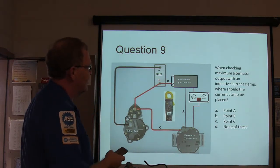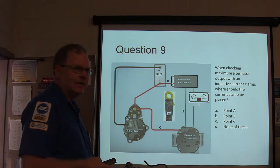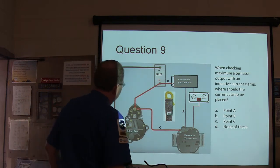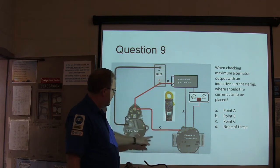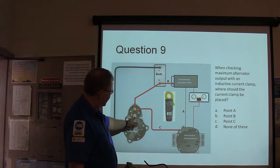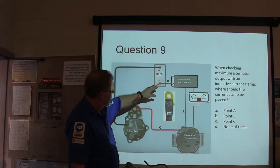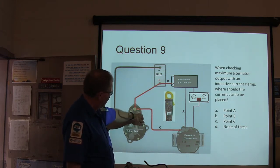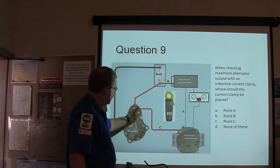Now, diode check is where you put your meter on the little diode check thing and you go from this big post right here to the frame and then you swap them around. You don't get a reading one way but not the other. That's what diode check is all about. All right. Now, we've been checking a maximum alternator output with an inductive current clamp. Where should the current clamp be placed? You're going to put it right there coming out of the alternator if you can get to that. Sometimes it's a pain to get to it. But I want you to notice how this is wired up.